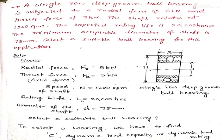We are going to see a problem on single row deep groove ball bearing. A single row deep groove ball bearing is subjected to a radial force of 8 kilo newtons and thrust force of 3 kilo newtons. The shaft rotates at 1200 rpm. The expected rating life is 20,000 hours. The minimum acceptable diameter of the shaft is 75 mm. Select a suitable ball bearing for this application.